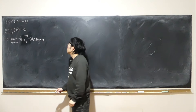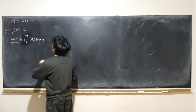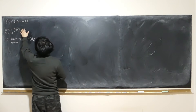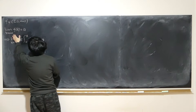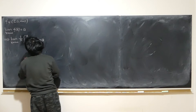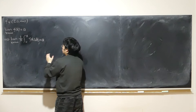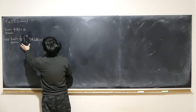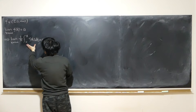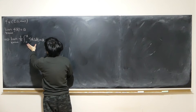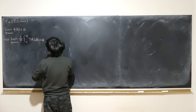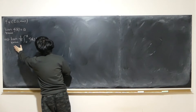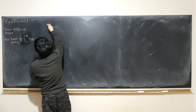We're given the function that's continuous over 0 all the way up to positive infinity. And if the limit of f(x) is a as x approaches positive infinity, then we want to show that the limit of (1/x) times the integral from 0 to x of f(t) dt is also equal to a, also as x approaches positive infinity.